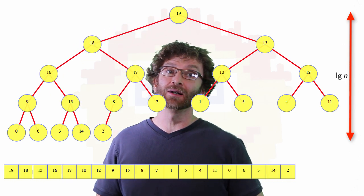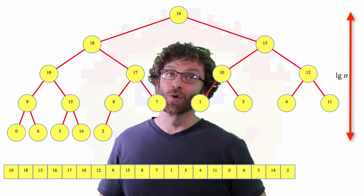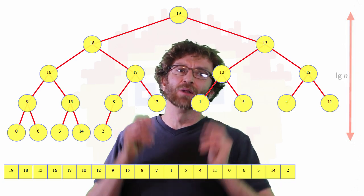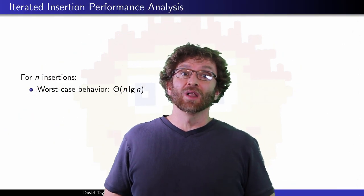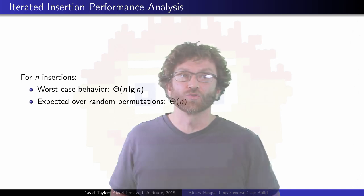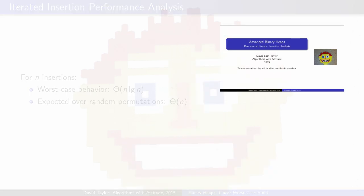To be fair, iterated insertion gets a bit of a bum rap. For a set of values in random order, most don't really bubble up too much. Most values end up near the bottom of the tree, and each insertion will on average take just a couple of swaps. But that analysis is definitely not basic. Maybe I'll make an advanced video sometime on that.